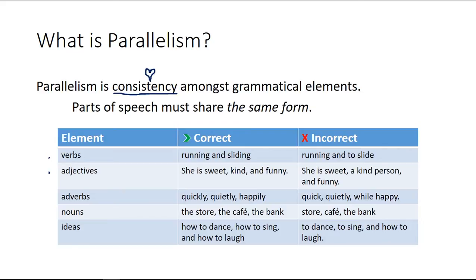So let's start with verbs. Running and sliding — they both end the same, and you can hear it: running and sliding. Compare this to how these two sound together: running and to slide. Notice how it changes there; the pattern goes away — running, and then to slide.